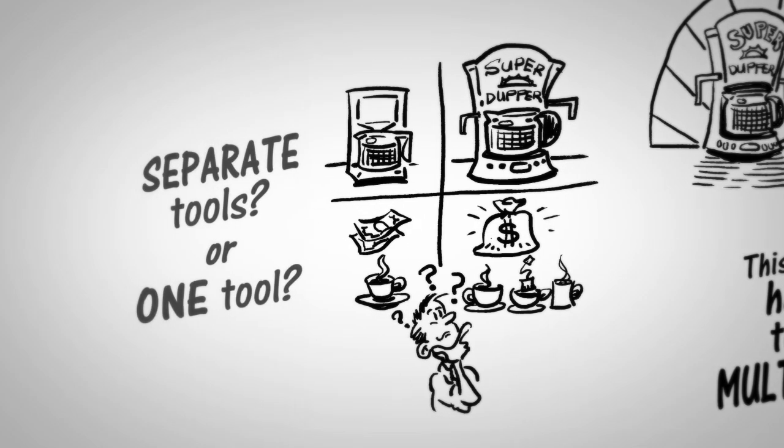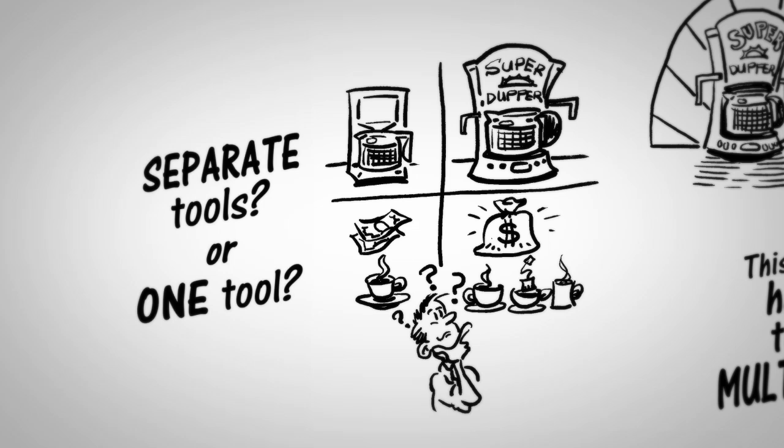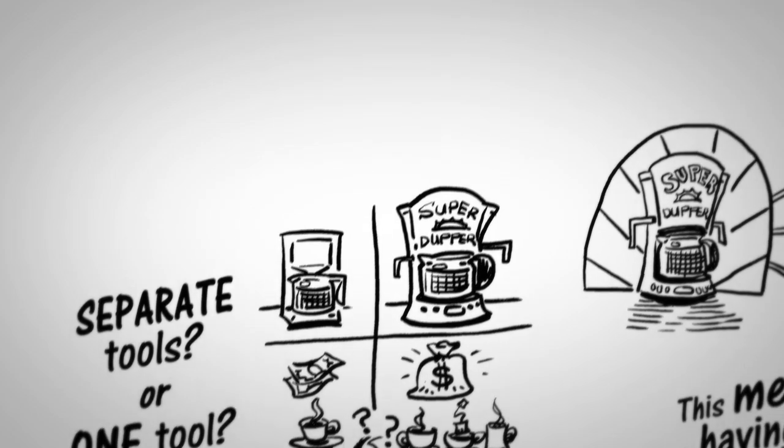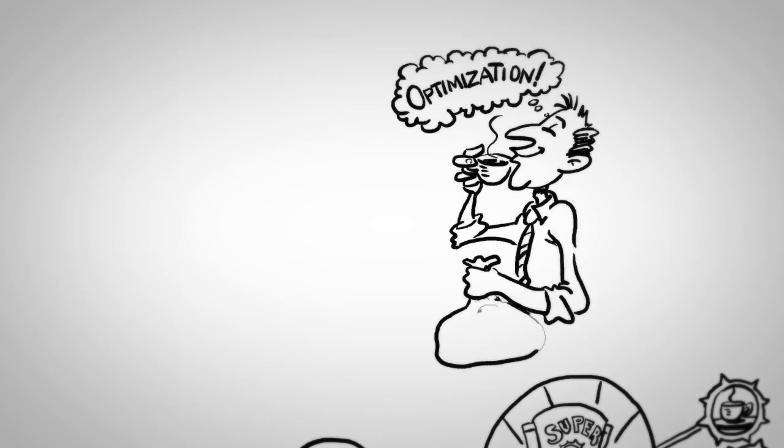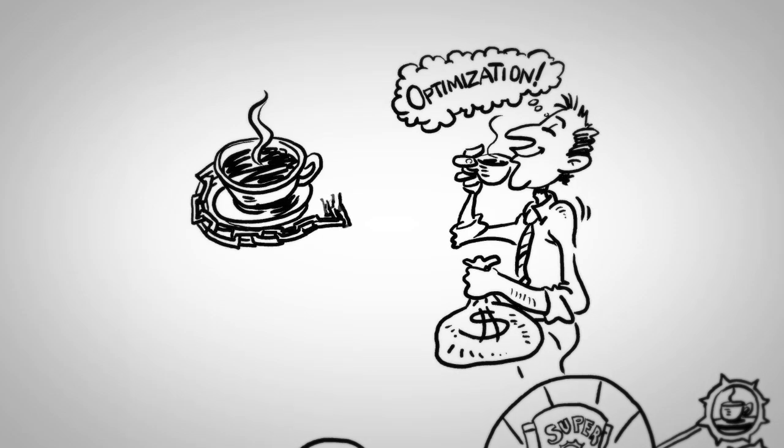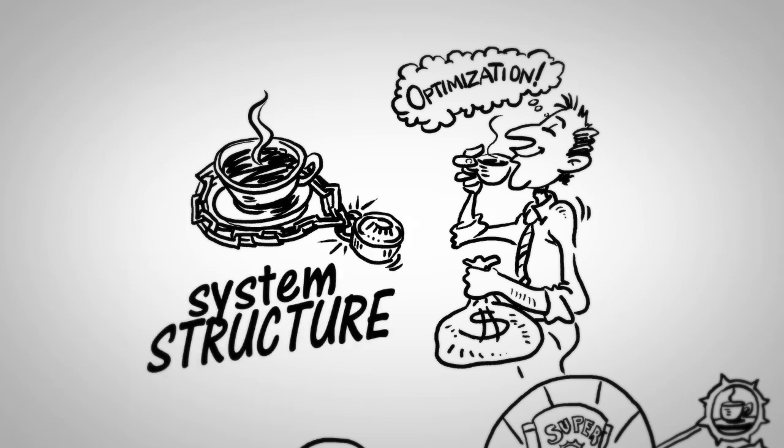So what will it be? Separate tools for each duty, or one tool to perform them all? Designing a system with one process is simple, but designing a system with multiple processes is an engineering challenge. Once an optimum design is found, you maintain that design for all future use. This means you are building a system structure, which is a stable parameter of the system.